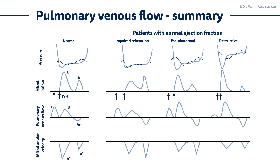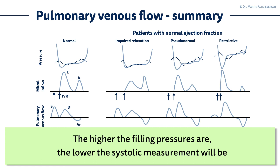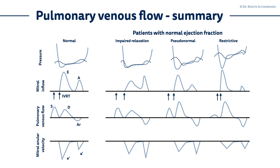You can see that the isovolumic relaxation time changes over time — from impaired relaxation (as it was called before the new guidelines), through pseudonormal, to the restrictive filling pattern. In grade 3 diastolic dysfunction with a restrictive filling pattern, the IVRT becomes relatively short. The S to D ratio also differs: in healthy individuals you have a higher systolic versus diastolic measurement, but the higher the filling pressures, the lower the systolic measurement gets and the higher the diastolic measurement gets — an S to D ratio of one is considered pathological. Furthermore, the AR reversal flow of the pulmonary venous signal becomes higher as filling pressures are elevated. All these measurements are very complex and you really need a nice signal to differentiate all those patterns.